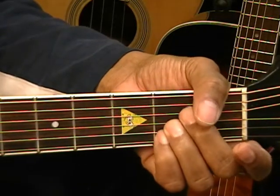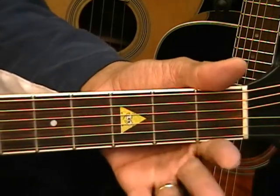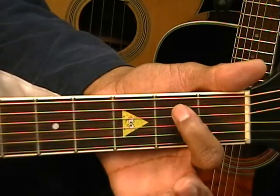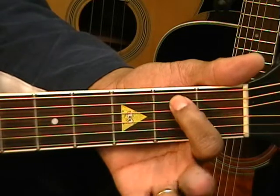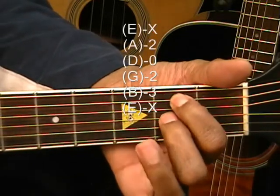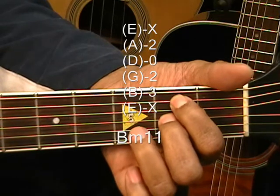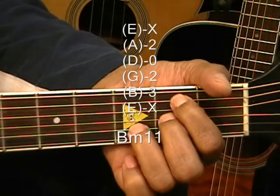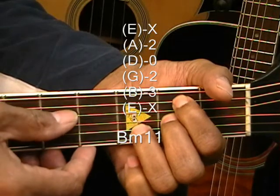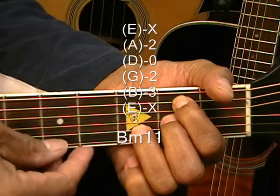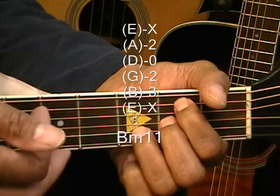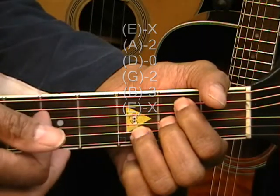Our next chord is B minor 11. We're going to take our first finger and go to the A string at the second fret, take the middle finger, go to the G string at the second fret, and the ring finger to the third fret on the B string. We're going to strum that from the B note, or the A string, and we're going to strum it this way. Okay?